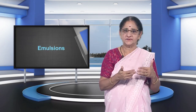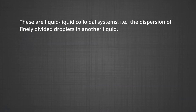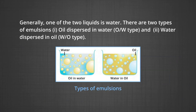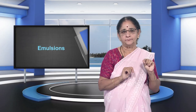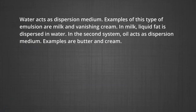Now let us see what we mean by emulsions. These are liquid-liquid colloidal systems — that is, the dispersion of finely divided droplets in another liquid. If a mixture of two immiscible or partially miscible liquids is shaken, a coarse dispersion of one liquid in the other is obtained, which is called an emulsion. Generally, one of the two liquids is water. There are two types of emulsions: number one, oil dispersed in water, known as O/W type; and number two, water dispersed in oil, called W/O type. These are depicted in the figure. In the first system, water acts as dispersion medium; examples include milk and vanishing cream. In milk, liquid fat is dispersed in water.